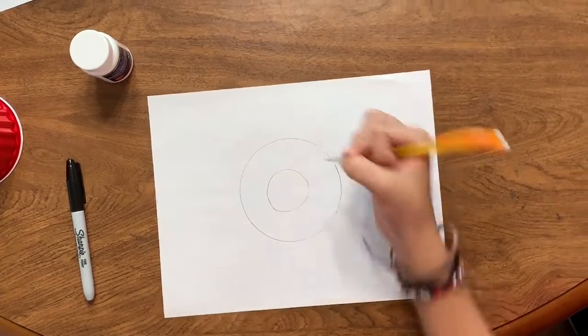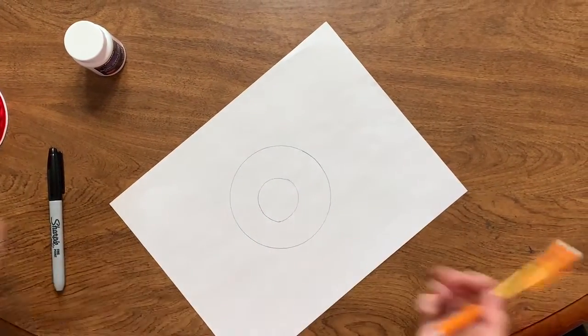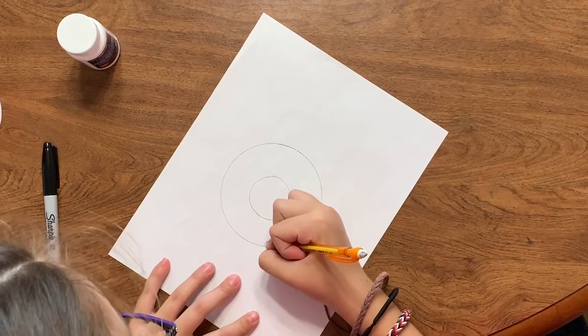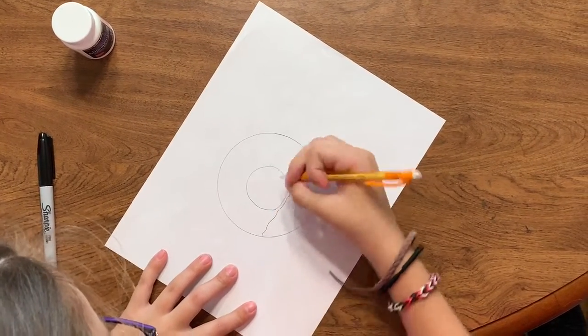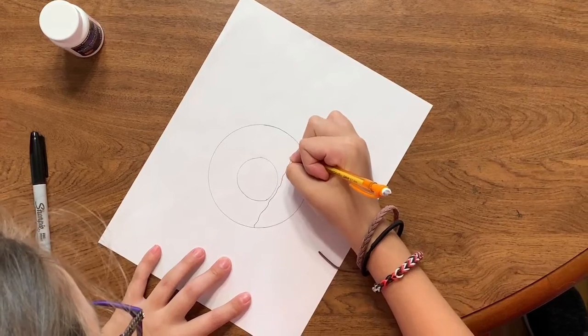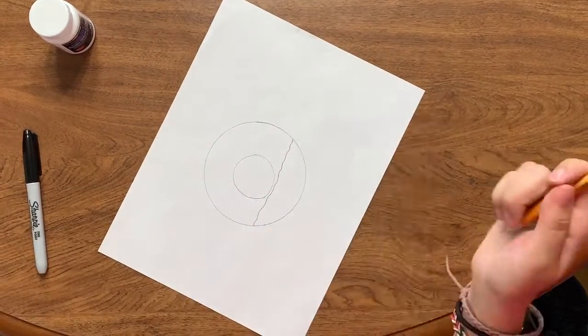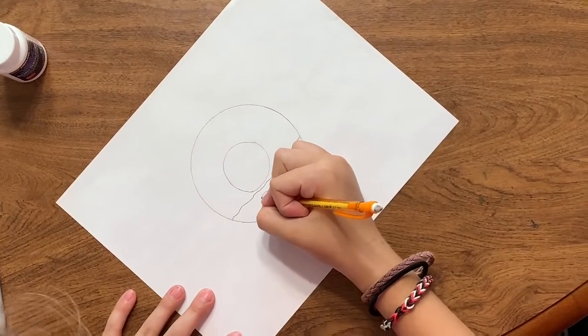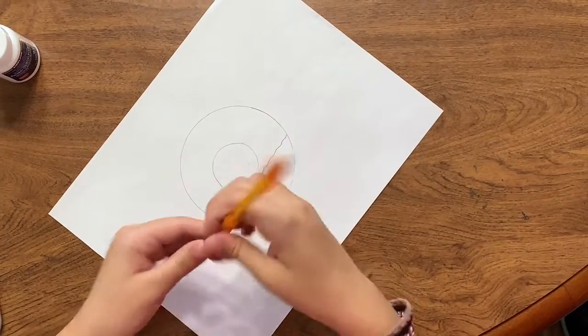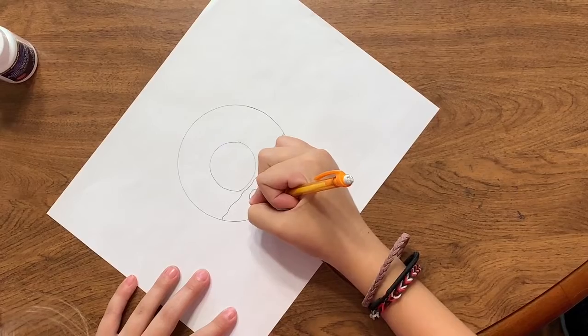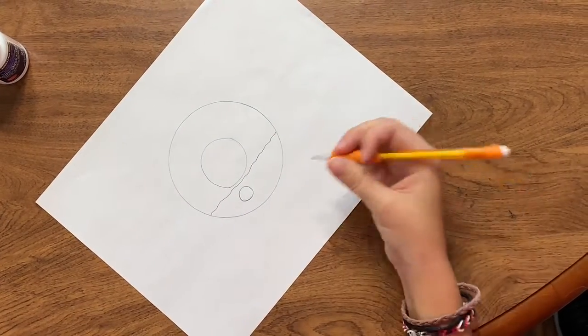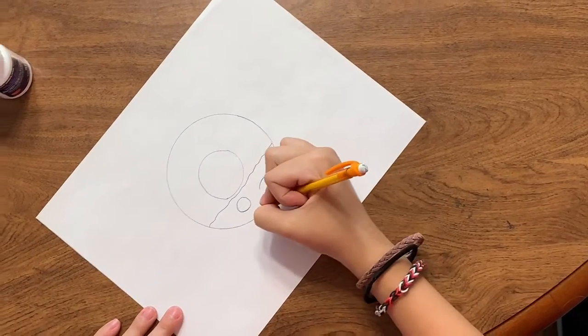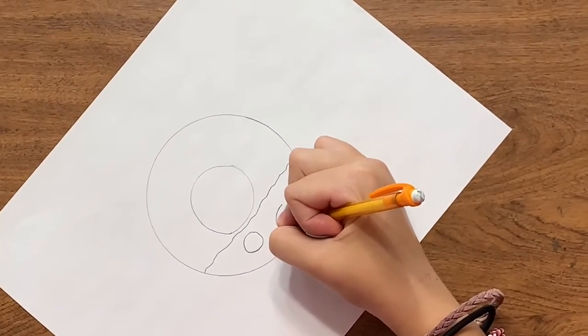Okay, so now that we have our basic donut shape, I'm going to draw a squiggly line. I'm going to draw a circle for the eye and a little shiny eye, and just do a little smile.